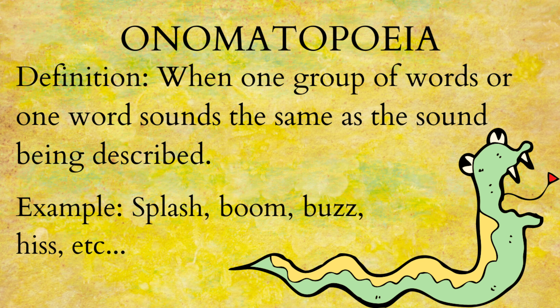Onomatopoeia — people have a hard time spelling or pronouncing this. The definition is when a word sounds exactly the same or similar to what it describes. For instance, the word 'splash' itself sounds just like the splash sound in real life. Or the buzzing of a bee — the sound of a bee buzzing sounds like the word 'buzz,' and that's why it's called onomatopoeia.